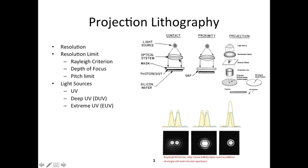In contact printing, you expose your wafer and get your pattern transferred after development. Another type is called non-contact or proximity lithography, where there is a small gap between your mask and your wafer. Why would we want a gap between the mask and wafer?